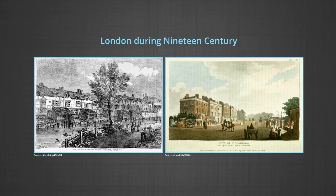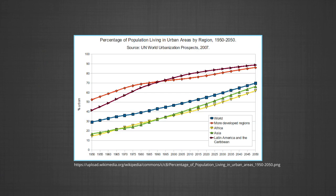Rapid urban growth is a recent phenomenon. Until recent times, few settlements reached a population size of more than a few thousand inhabitants. The first urban settlement to reach a population of 1 million was the city of London, by around AD 1810. By 1982, approximately 175 cities of the world had crossed the 1 million population mark. In the present times, 48% of the world's population live in urban settlements, compared to only 3% in the year 1800.